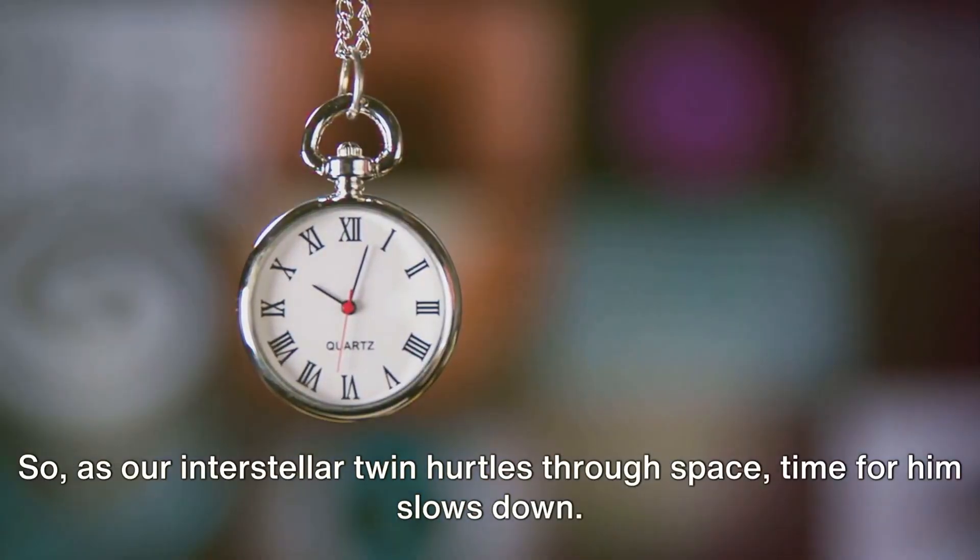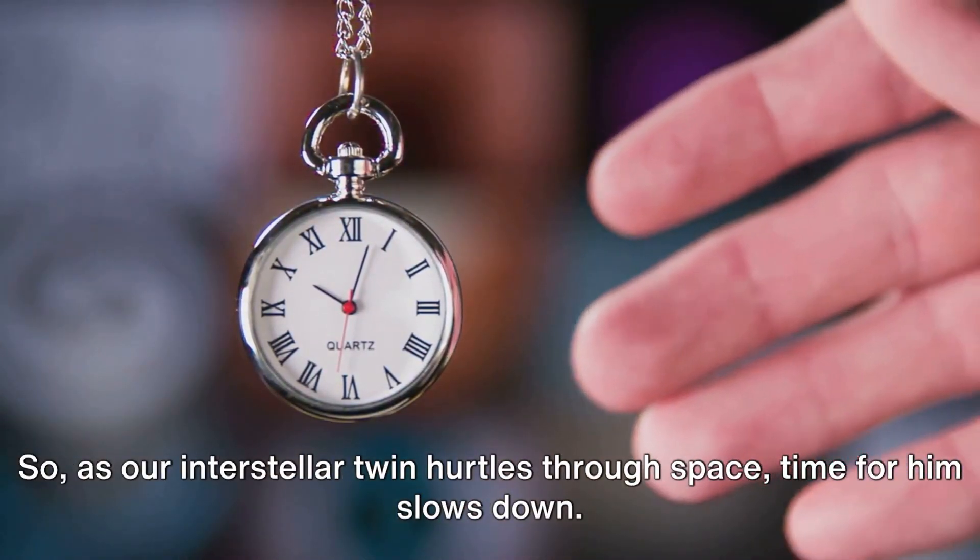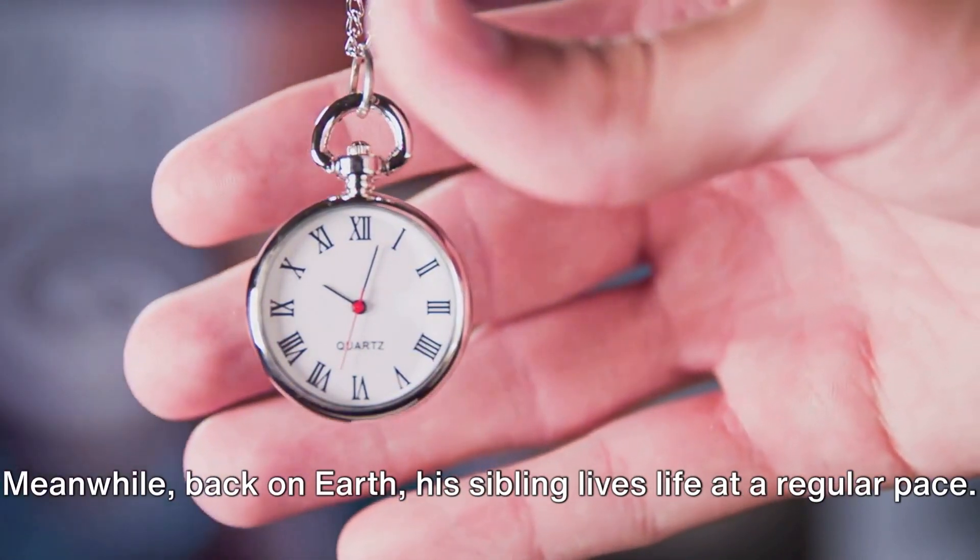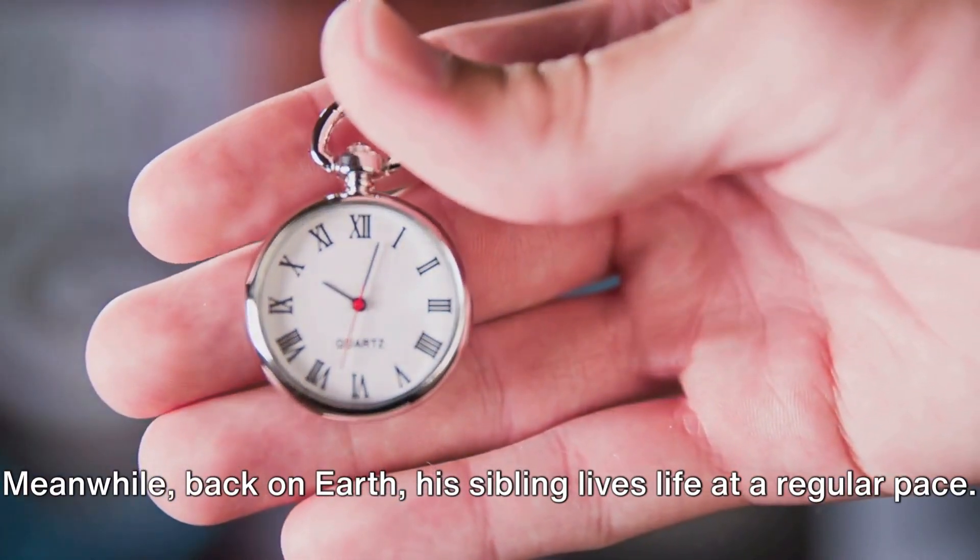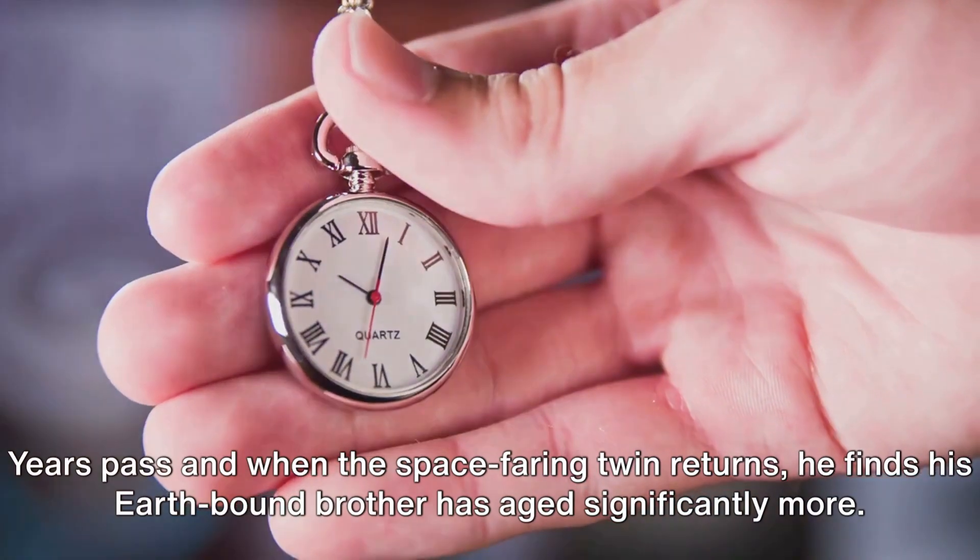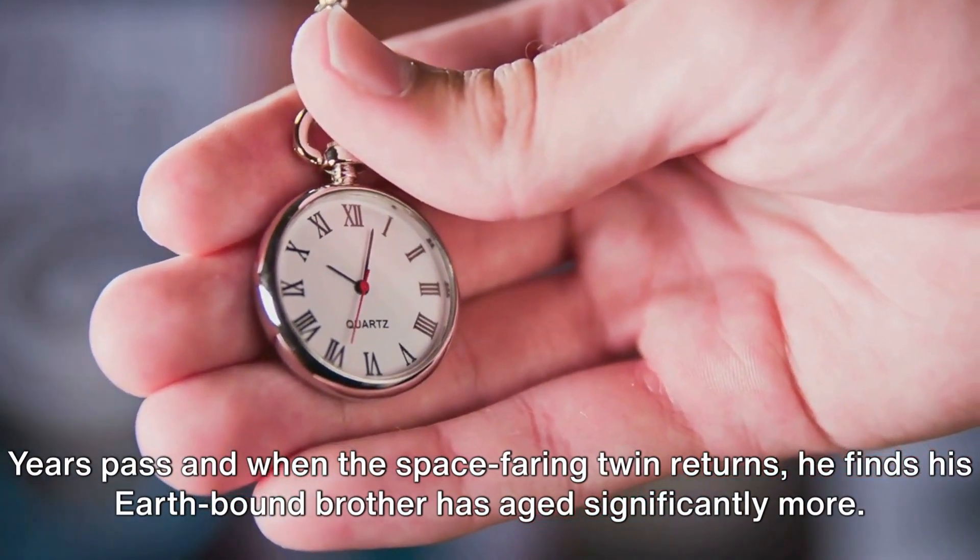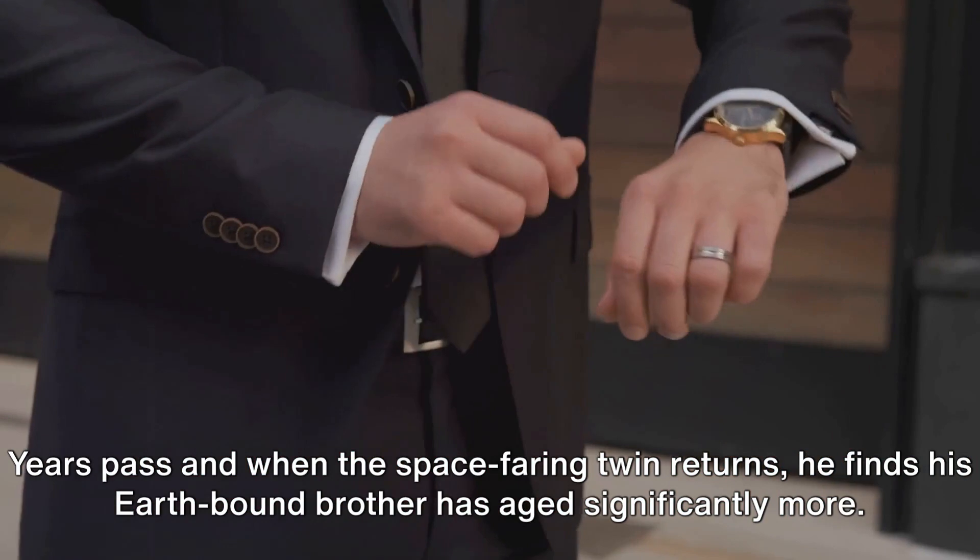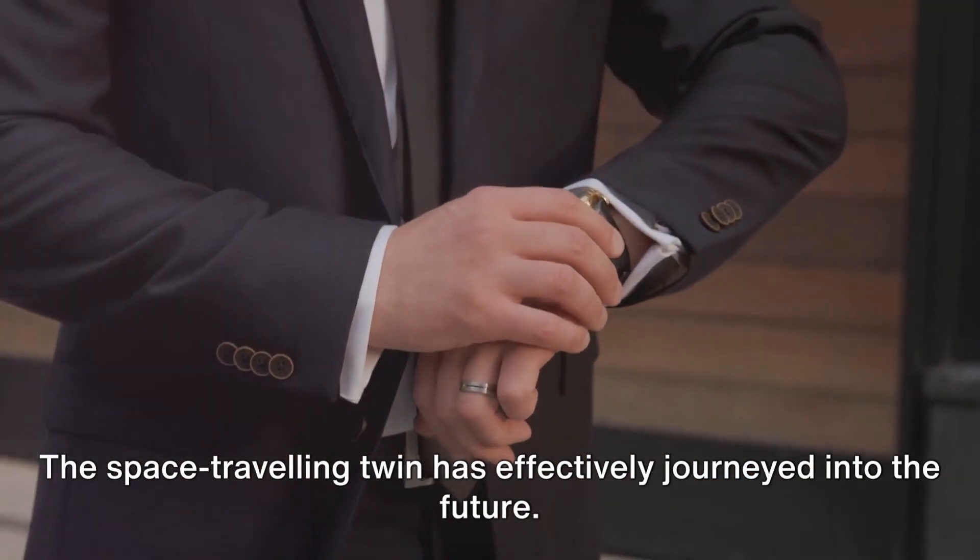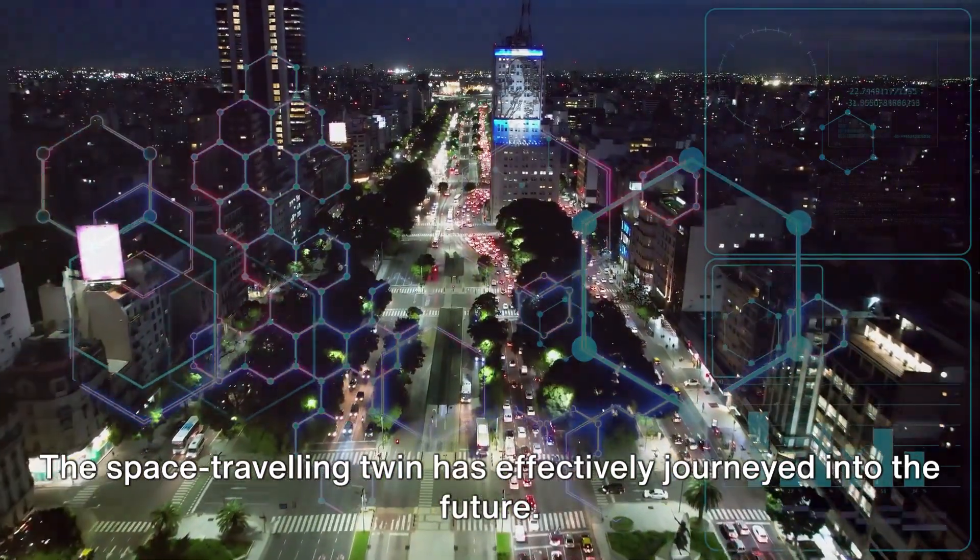So, as our interstellar twin hurtles through space, time for him slows down. Meanwhile, back on Earth, his sibling lives life at a regular pace. Years pass, and when the space-faring twin returns, he finds his Earth-bound brother has aged significantly more. The space-traveling twin has effectively journeyed into the future.